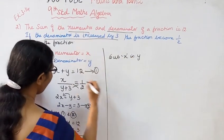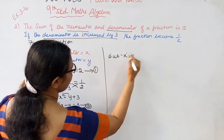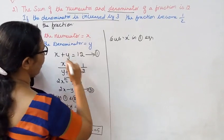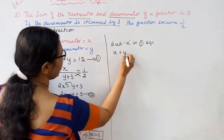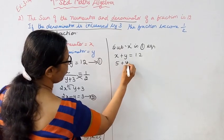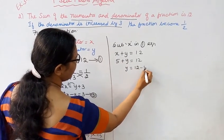Substitute x in the first equation. x plus y equals 12. 5 plus y equals 12. y equals 12 minus 5.